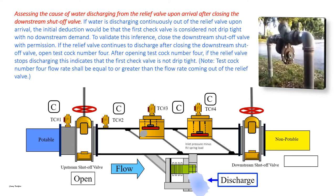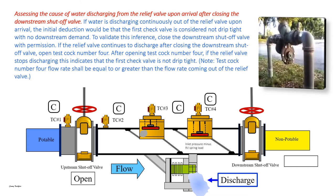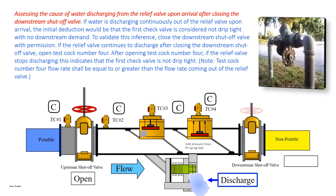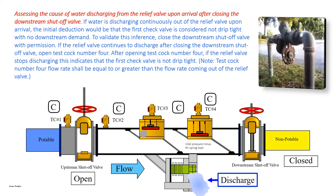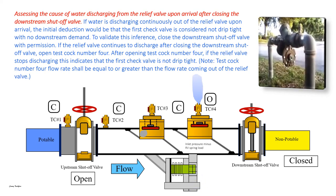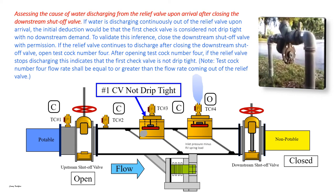Assessing the cause of water discharging out of the relief valve upon arrival after closing the downstream shutoff valve. If water is discharging continuously out of the relief valve upon arrival, the initial deduction would be that the first check valve is not drip tight with no downstream demand. To validate this inference, close the downstream shutoff valve with permission. If the relief valve continues to discharge after closing the downstream shutoff valve, open test cock number four. After opening test cock number four, if the relief valve stops discharging, this indicates that the first check valve is not drip tight. Note: test cock number four flow rate shall be equal to or greater than the flow rate coming out of the relief valve.